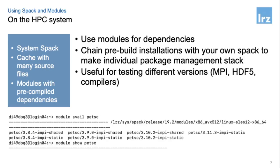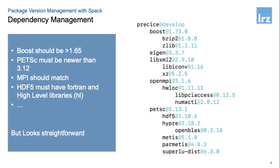On the HPC system, things are more complicated. For software like MPI or HDF5, you typically don't want to install your own versions because there are already optimized versions pre-installed on the system. Also, without internet access, you have to fetch some source codes by hand. You also need to ensure specific constraints: for example, Boost must be newer than 1.65, you need a recent version of Petsy, the MPI versions of different dependencies must match and use the system-optimized MPI, and HDF5 must be compiled with Fortran and high-level libraries for use with PFloatran.